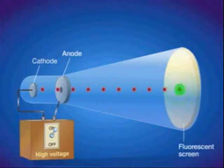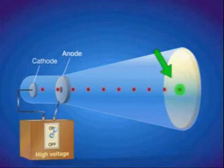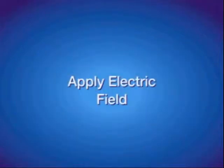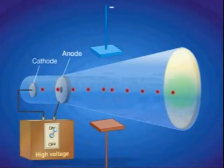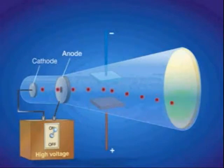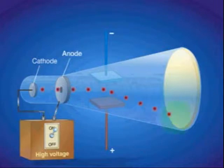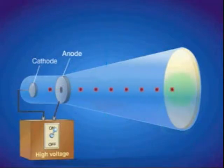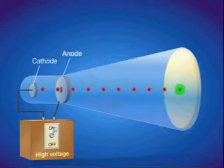When the ray strikes the specially coated surface, the cathode ray produces a strong fluorescence, or bright light. When an electric field is applied across the cathode ray tube, the cathode ray is attracted by the plate bearing positive charges. Therefore, a cathode ray must consist of negatively charged particles. We know these negatively charged particles as electrons.